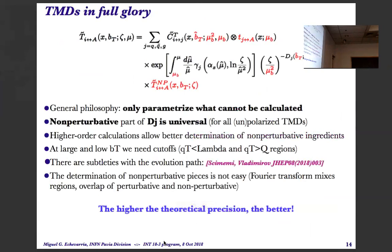TMDs can be written in terms of their collinear counterparts — here T means any TMD: polarized, unpolarized, fragmentation, PDF, whatever. All of them will have the corresponding integrated one-dimensional counterpart with a Wilson coefficient. The general philosophy is that we only want to parameterize what cannot be calculated. The non-perturbative part of the D function is universal, which helps in phenomenology. Higher-order calculations allow for a better determination of the non-perturbative part — the better we know the perturbative, the better we can isolate the non-perturbative.